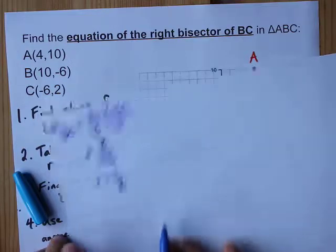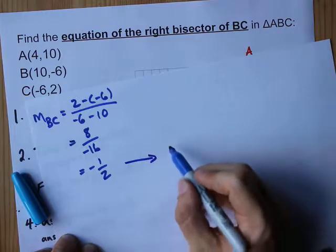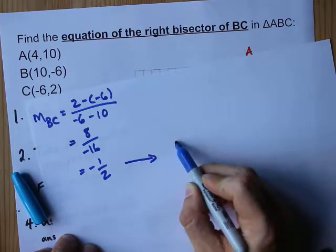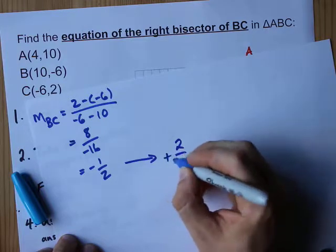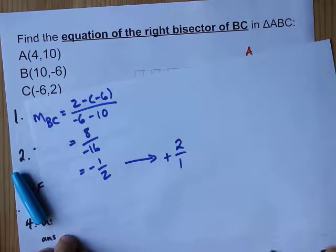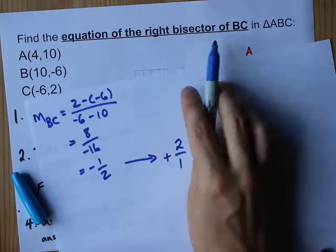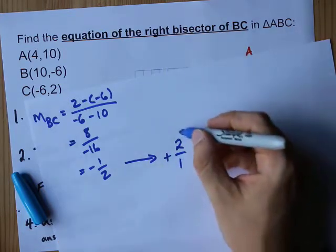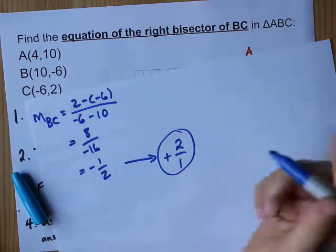Step two is to take its negative reciprocal. The way you do that is you flip the fraction, 1 over 2 becomes 2 over 1, and you flip the sign negative to positive. That means that the slope of our right bisector is positive 2. 2 divided by 1 is 2. Slope is 2. Done.